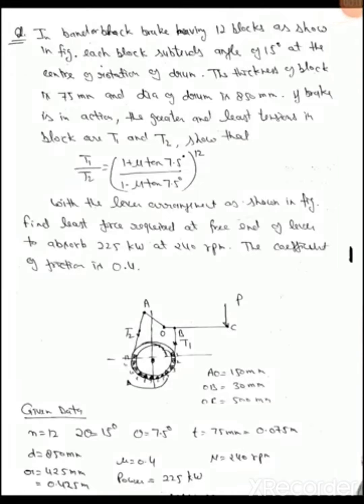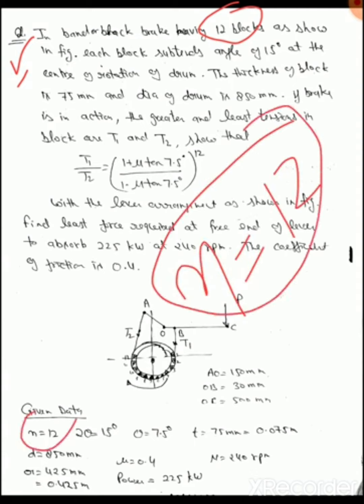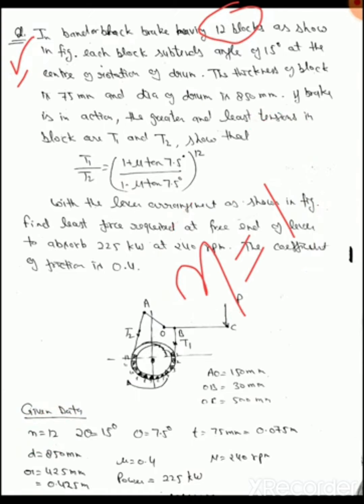Good morning students. This is lecture number seven of Theory of Machines, Unit number five: Brakes and Dynamometers. Here we will discuss a very simple problem of band and block brake and a differential band brake casing. First we read the numerical question very carefully. In the question, the band and block brake has 12 blocks, so the number of blocks n is 12.